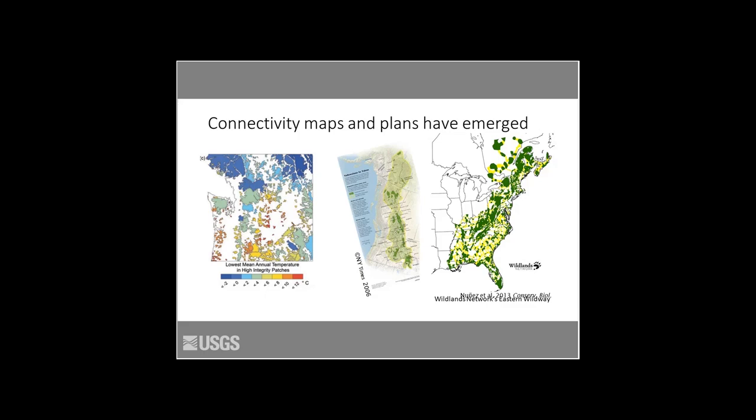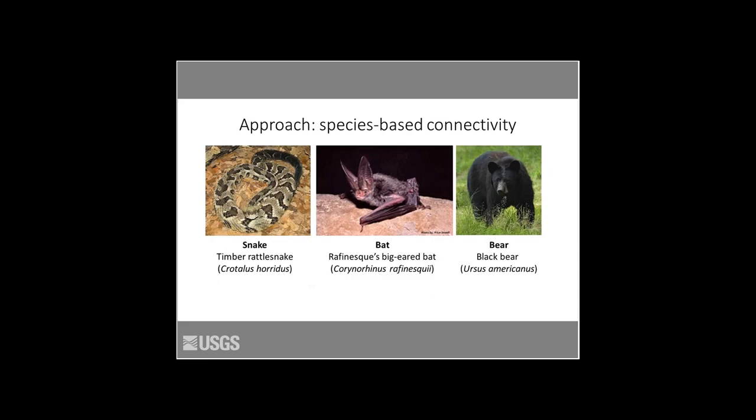Our study took the latter approach in that we were identifying existing connectivity networks, but then wanted to think about what we do with these once we've identified connectivity networks for species — what do we do for climate change? Our broader study focused on connectivity mapping and modeling for three species in the Southeast. They were identified as priority species, and we consulted with biologists and experts from the landscape conservation cooperatives in the region and others.